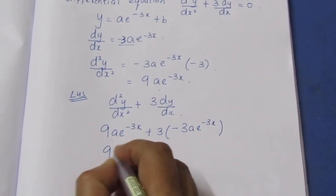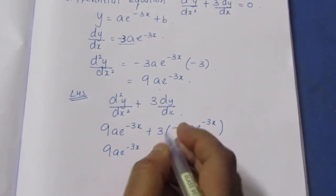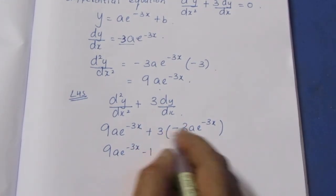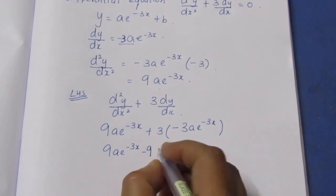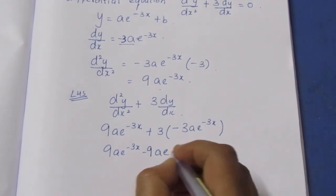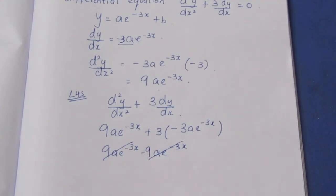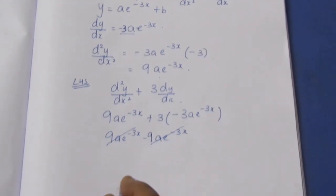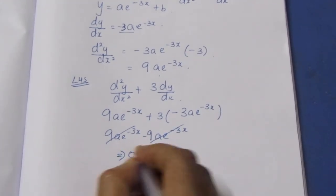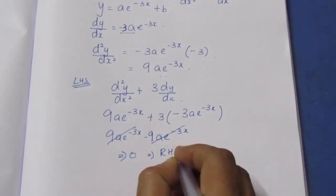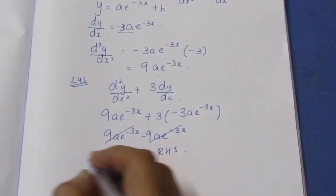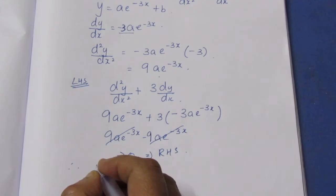Now substituting into the equation: d squared y by dx squared plus 3 dy by dx equals 9ae to the power minus 3x plus 3 times minus 3ae to the power minus 3x. This gives 9ae to the power minus 3x minus 9ae to the power minus 3x, which equals 0. Therefore, it is the solution of the differential equation.